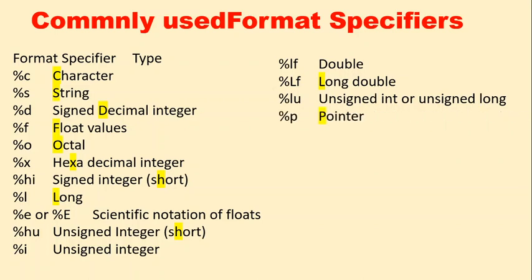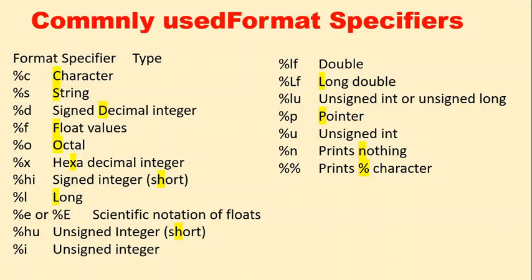%p stands for pointer, which we will discuss in coming videos. %u means unsigned integer. %n means nothing — if you don't want to print anything and just want to leave some blank space, you use %n. Finally, if you want to print a percentage symbol itself, you use double percentage (%%) and it will print the percentage symbol. These are some commonly used format specifiers.